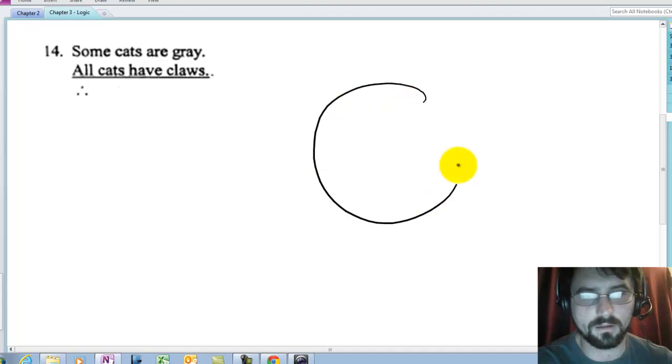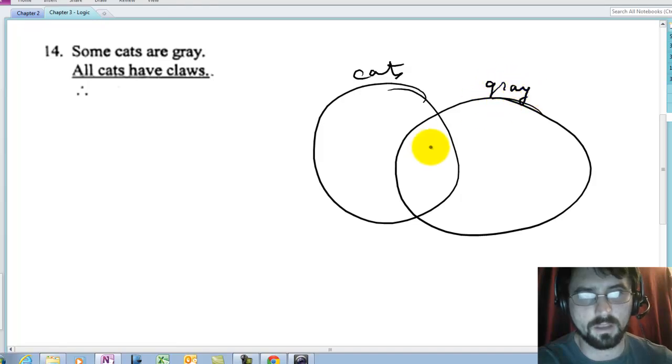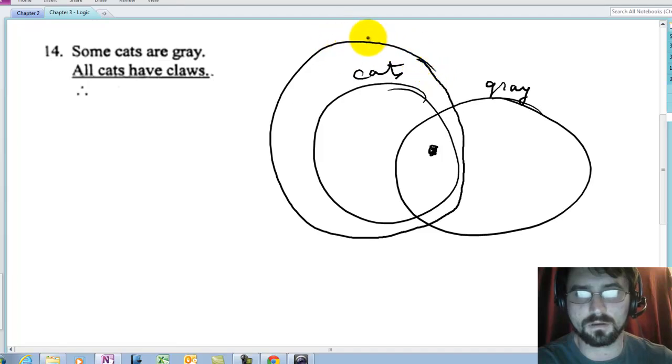In the last one, some cats are gray. Cats. Gray things. And some cats are gray. There we go. All cats have claws. Claws. Now we could have a bunch of conclusions here, but what can we conclude? Let's conclude that some gray things have claws.